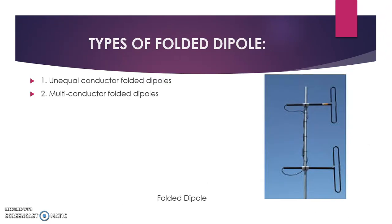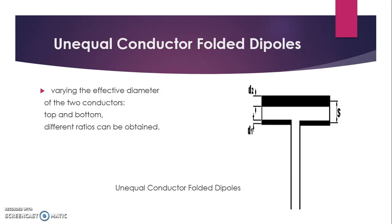These are the types of folded dipole. First is the unequal conductor folded dipole, and second is the multi-conductor folded dipole. You can see the folded dipole in the figure. The unequal conductor folded dipole involves varying the effective diameter of two conductors — top and bottom. Different ratios can be obtained. You can see here that D1 is quite smaller than D2, and D2 is bigger. You can keep any ratio as per your convenience.